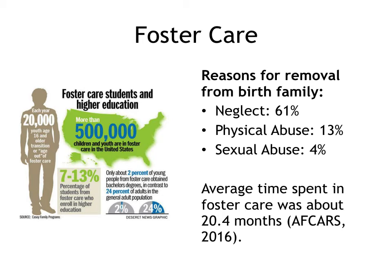There may be many reasons why a child would be removed from their birth family and placed in state care. The most common is simply neglect — about 61% of children removed from birth families do so because of some finding of parental neglect. As many as a third of those are removed simply because of problems associated with parental poverty, such as homelessness. Physical abuse is the second most common cause at about 13%, and sexual abuse at about 4%. The average time spent in foster care is about 20.4 months in 2016, according to the Adoption and Foster Care Analysis and Reporting System.